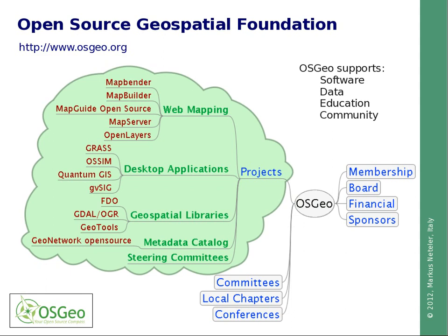But OSGEO is not only about software. It is also about public geodata, education, and community development. OSGEO itself is controlled by charter members who elect a board of directors. There is financial support from different sponsors, especially from industry. To acknowledge that users want to speak their native language, a series of local chapters have been founded. Each year, a series of conferences is held in different countries.